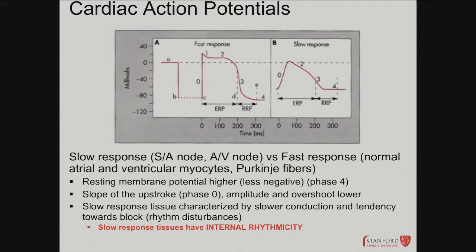Pacemakers are largely independent with their own internal clock, but that's only partially true — there is nervous system control via parasympathetic tone from the vagus nerve. The ion channels operating in the phase zero of the slow response are under parasympathetic innervation. So when you're an athlete sitting at rest and don't need much cardiac output, the brain uses the vagus nerve to tone down your pacemaker rate. Your heart pumps more blood per beat, so you achieve the same perfusion at a lower heart rate.